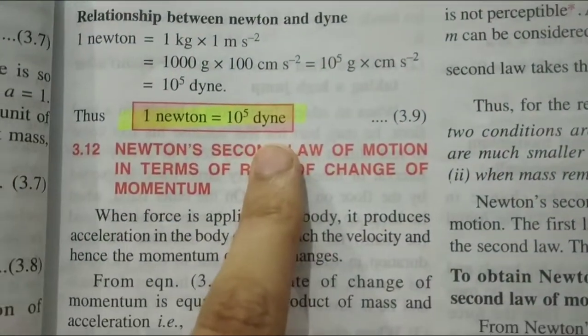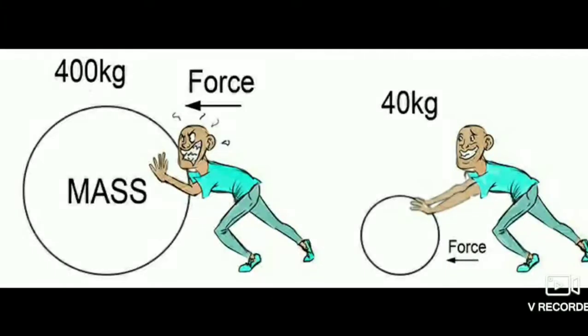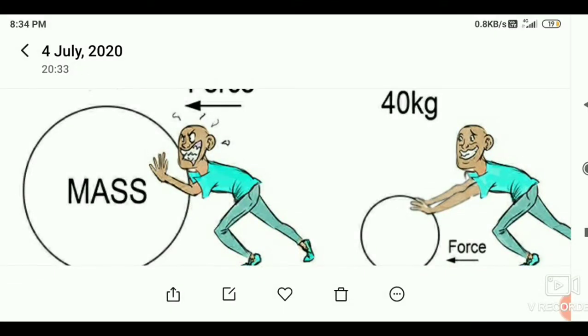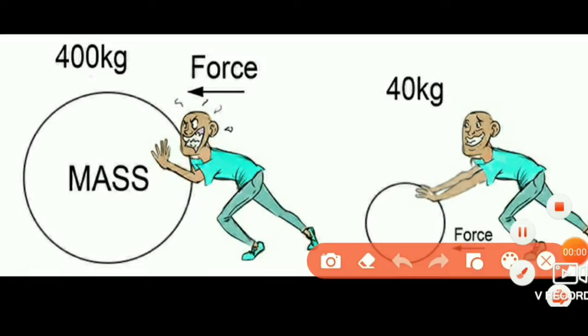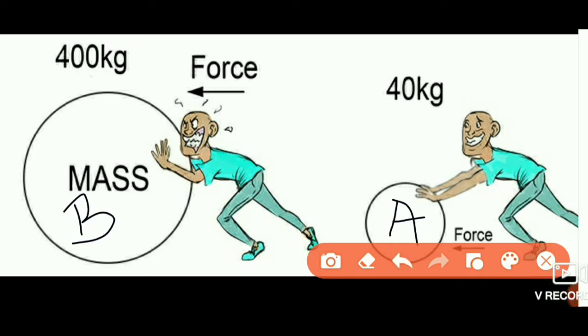Here we have object A and object B. Object A has a mass of 40 kg, and object B has a mass of 400 kg.